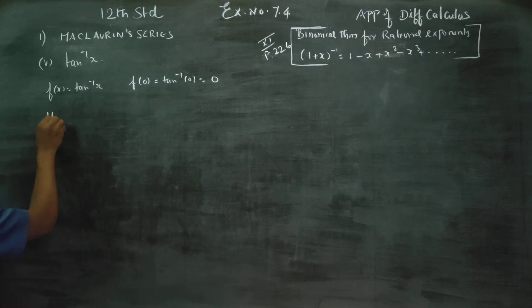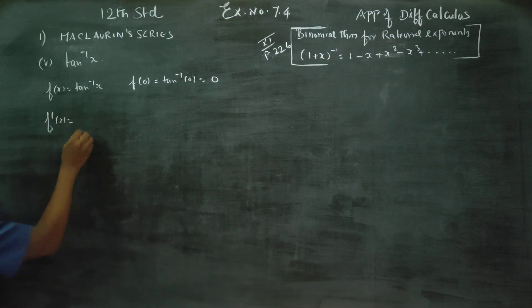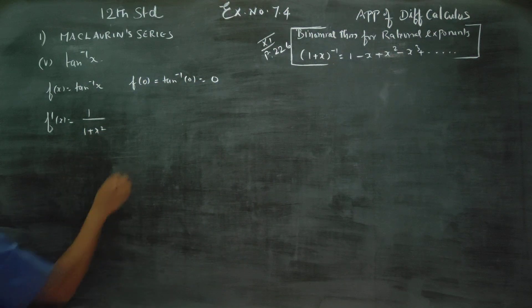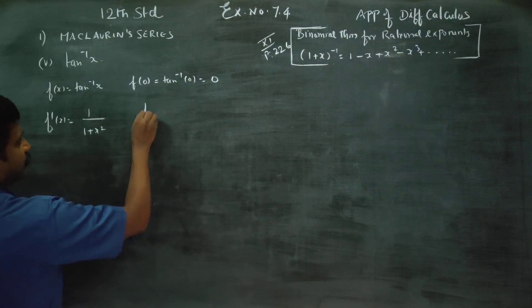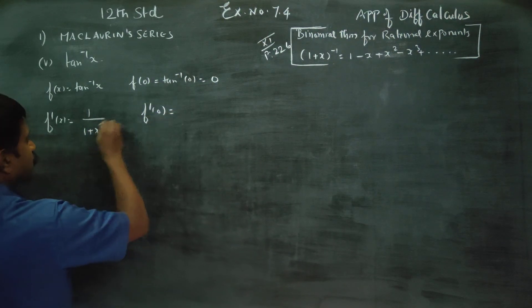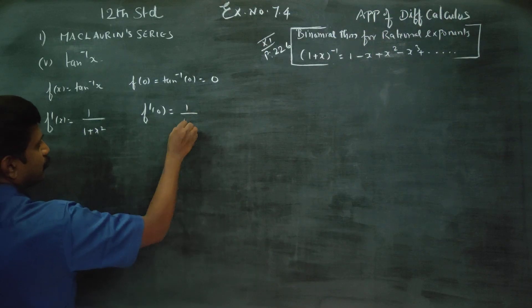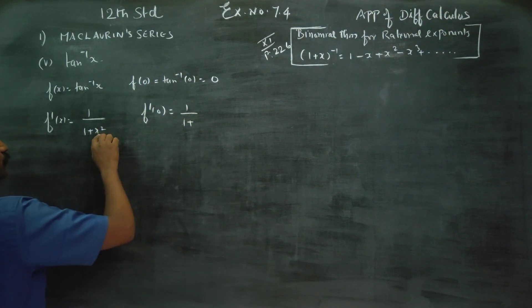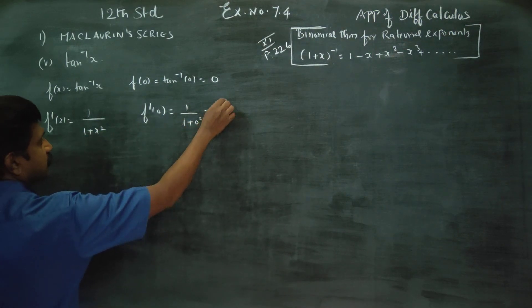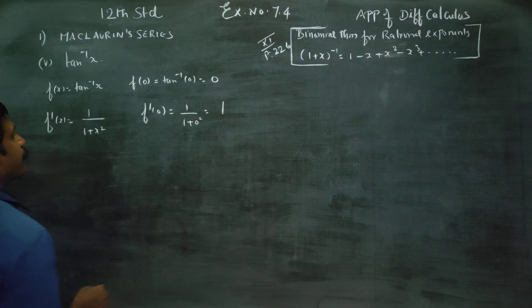Next, differentiate: f dash x, the derivative of tan inverse x, is 1 by 1 plus x squared. Now substitute x equals 0 to find f dash 0: 1 by 1 plus 0 squared, which gives 1.